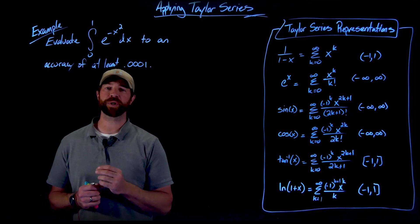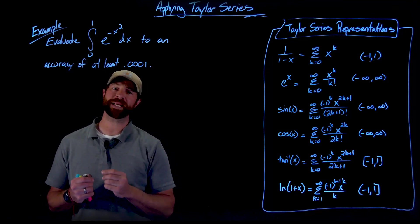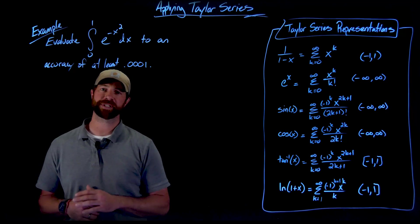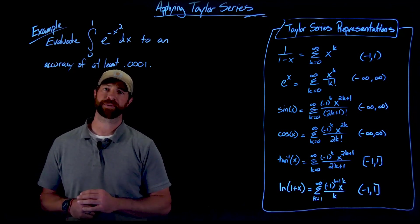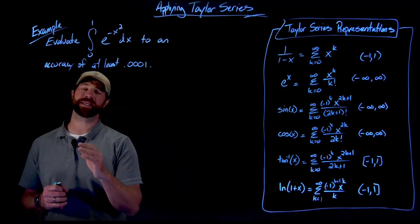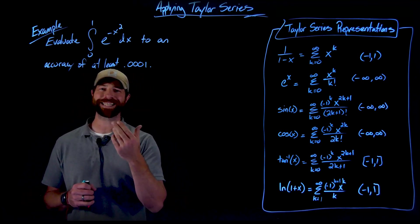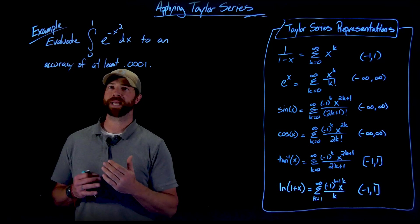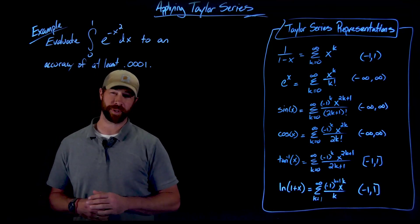Hey, welcome back. In this video, we're going to see one of the most important applications of Taylor series representations. In this case right here, we're being asked to evaluate the integral from 0 to 1 of e to the negative x squared to an accuracy of at least 0.0001.